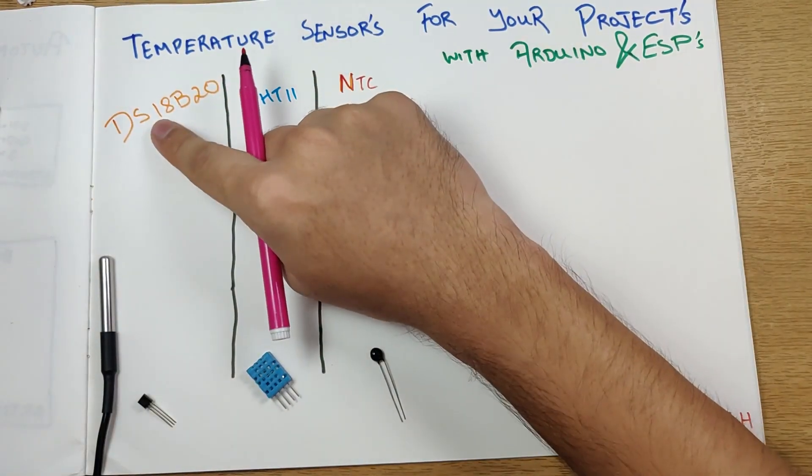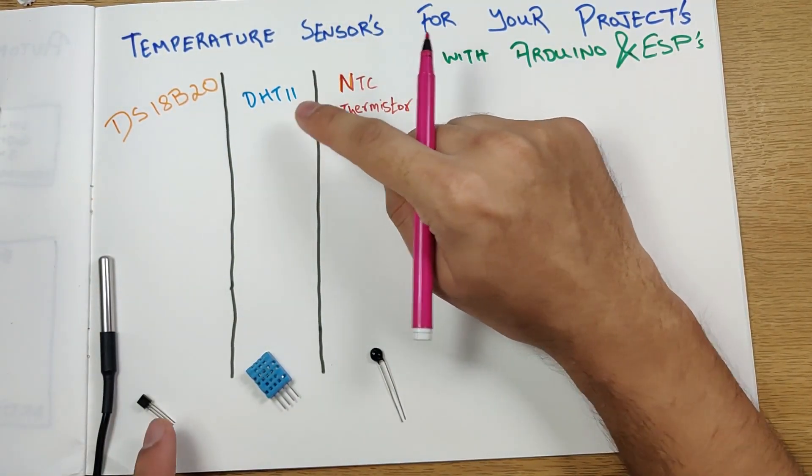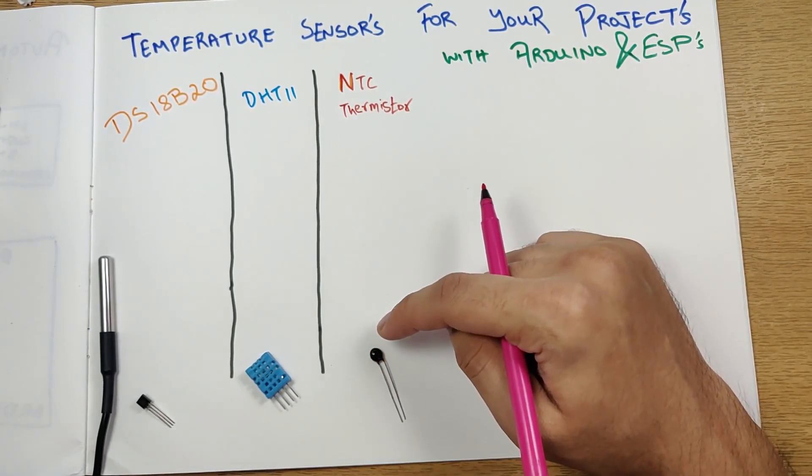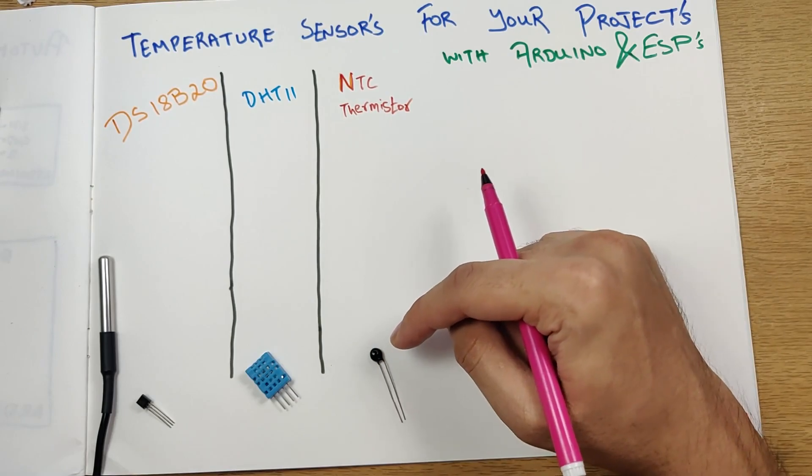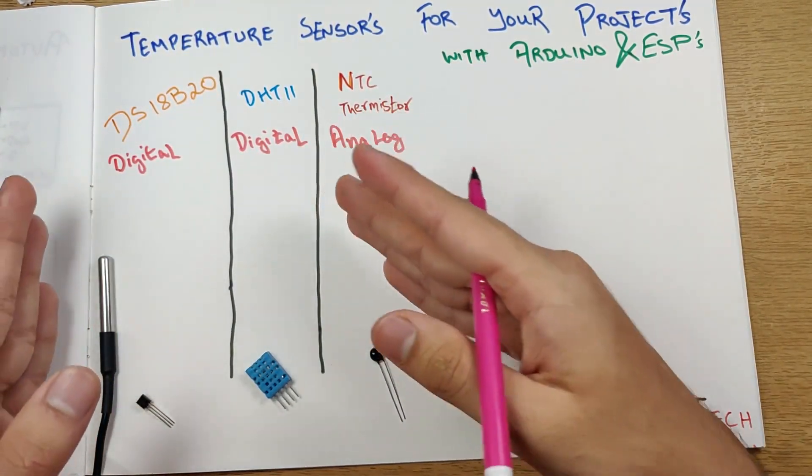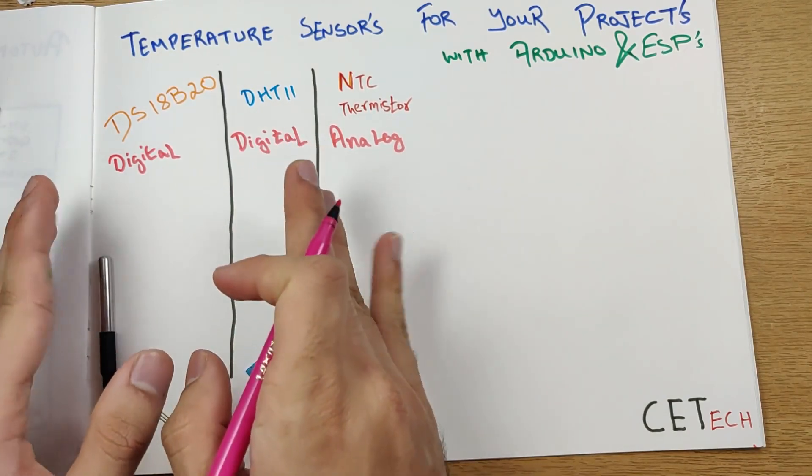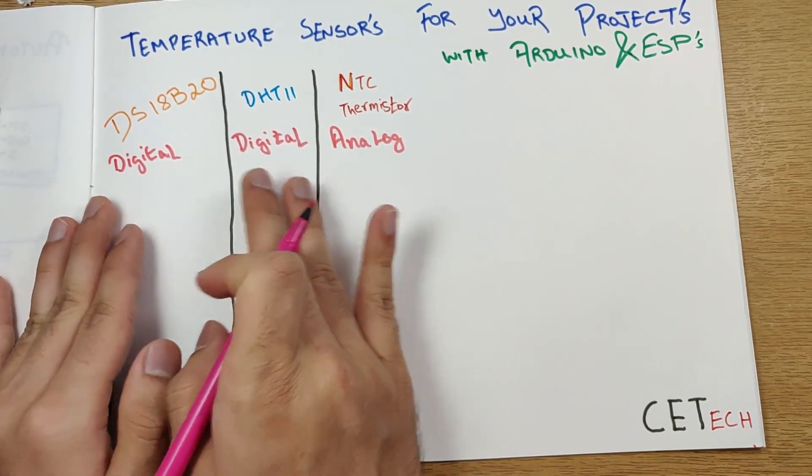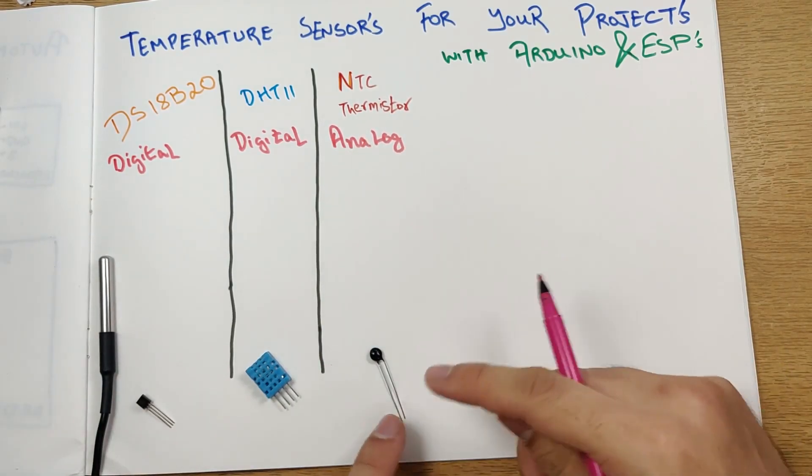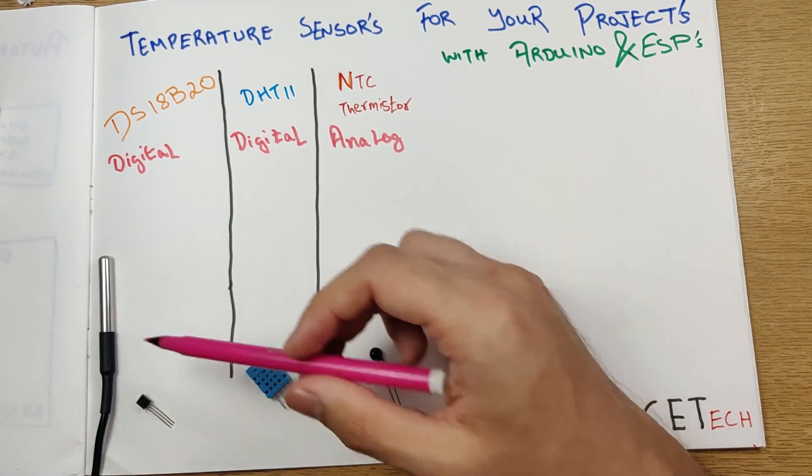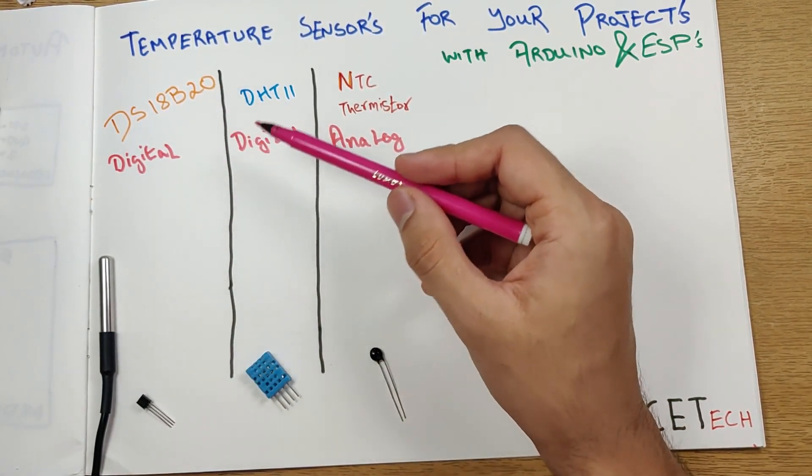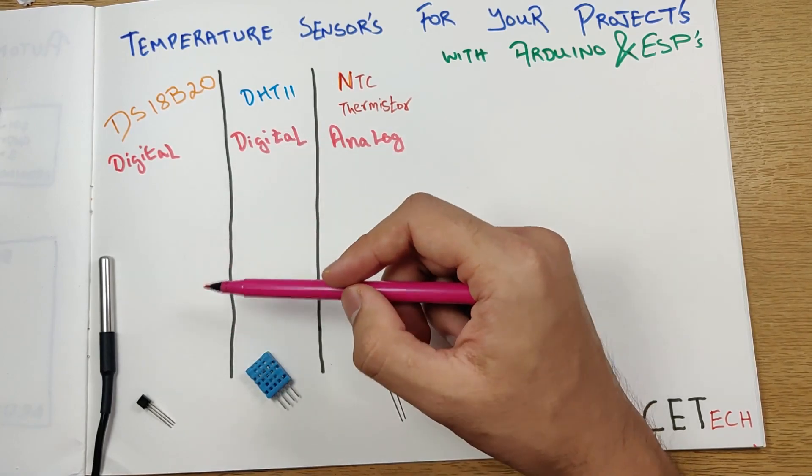So first things first, the DS18B20 and the DHT11, these two sensors are digital sensors, while the NTC thermistor that we have is an analog sensor. So now we have a more stricter criteria wherein we will be focusing more on comparing these two as this is a type of a different sensor essentially.